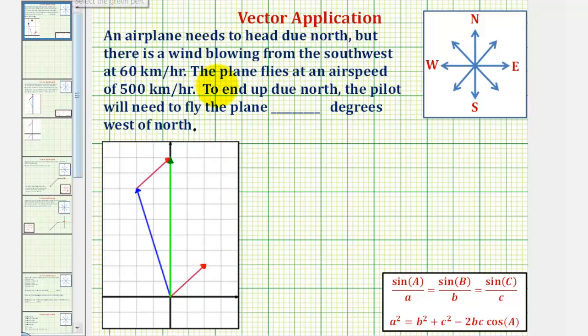To begin, the plane wants to fly due north, so to represent this, we could use this green vector here, pointing due north. So let's call this green vector, vector r, for the resultant vector.